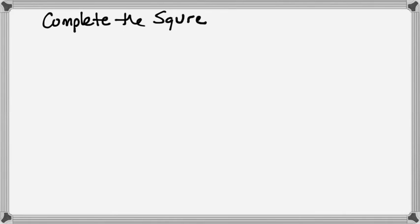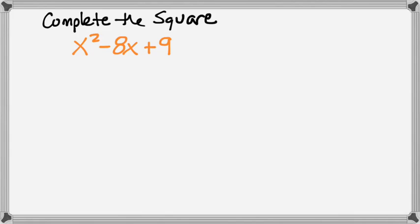Completing the square — it's another way we can factor quadratic equations, and a different way we can solve them as well. The big reason we complete the square is so that we can change a standard form equation into a vertex form equation. So we can go from standard form straight to vertex form. For example: x squared minus 8x plus 9.